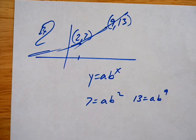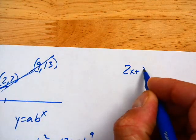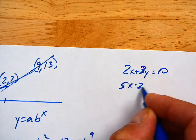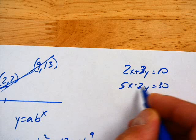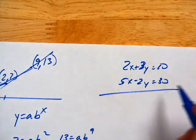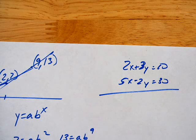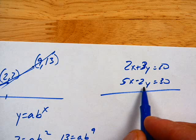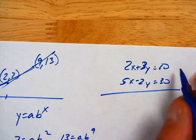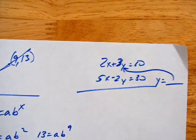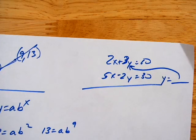We've solved systems in a bunch of different ways before. Like if I have 2x plus 3y equals 10, 5x minus 2y is equal to 30, I just go ahead and eliminate. I multiply the top by something, multiply the bottom by something, and combine my equations in some way to get down to one variable.